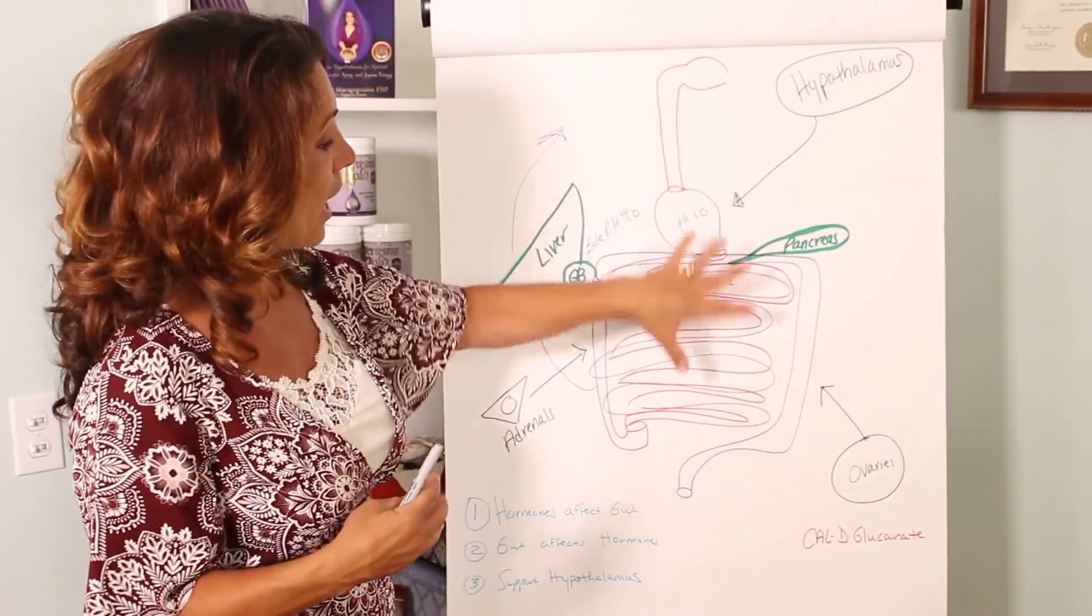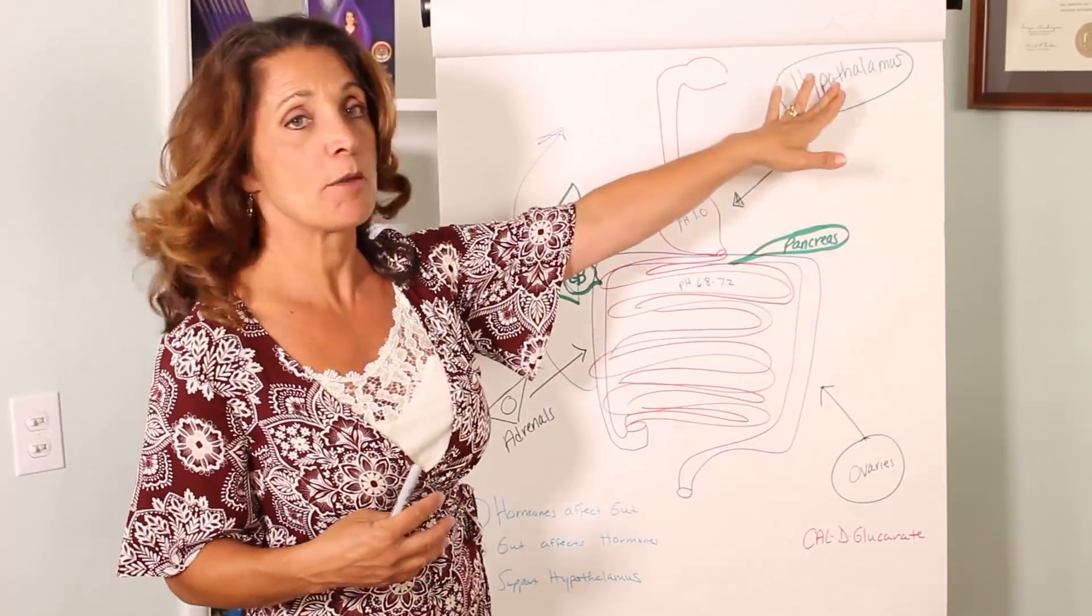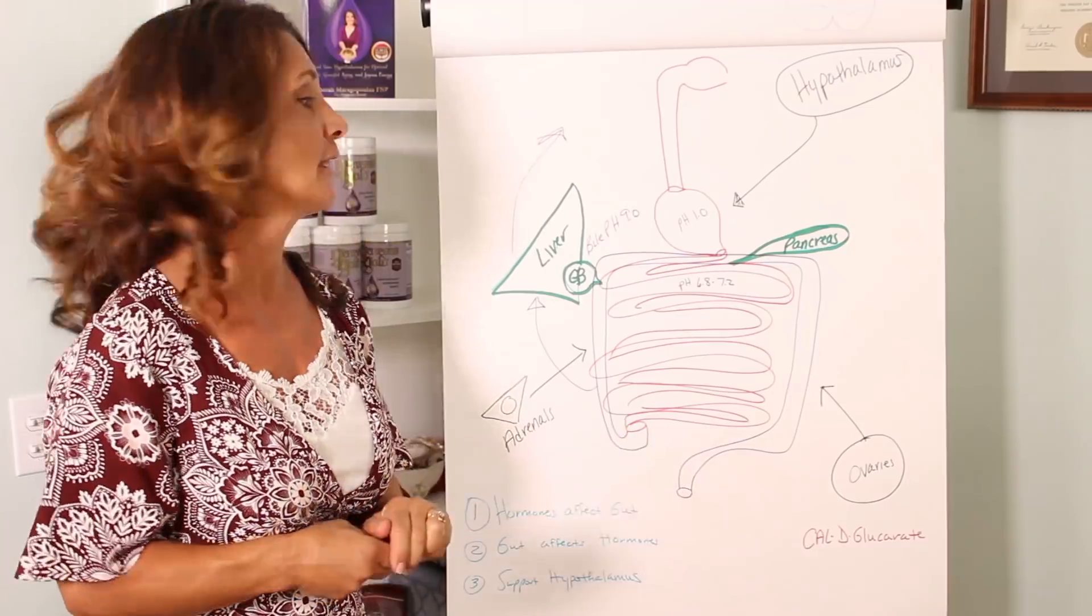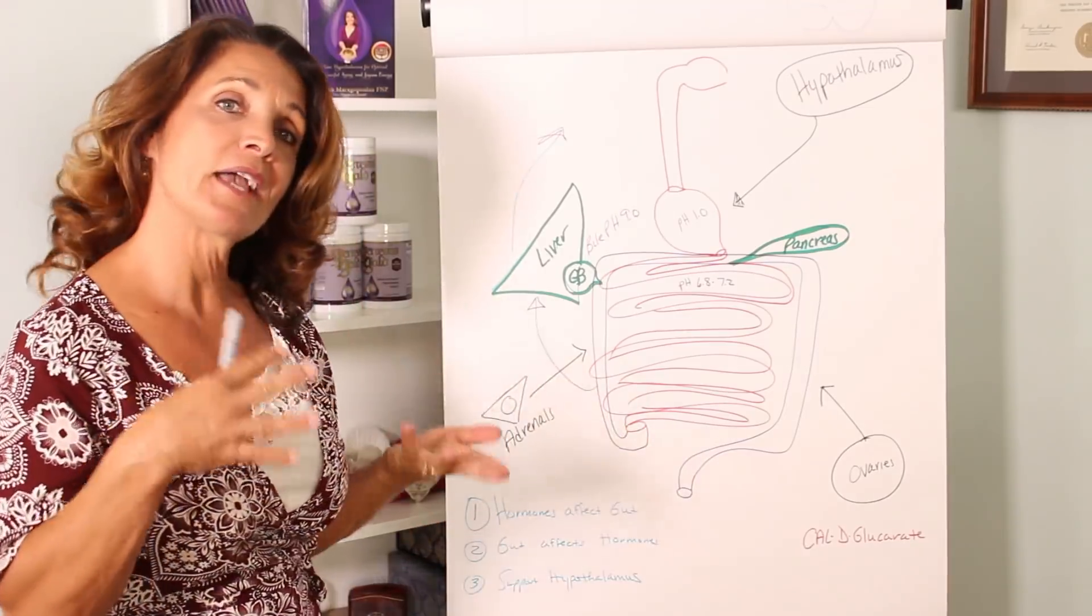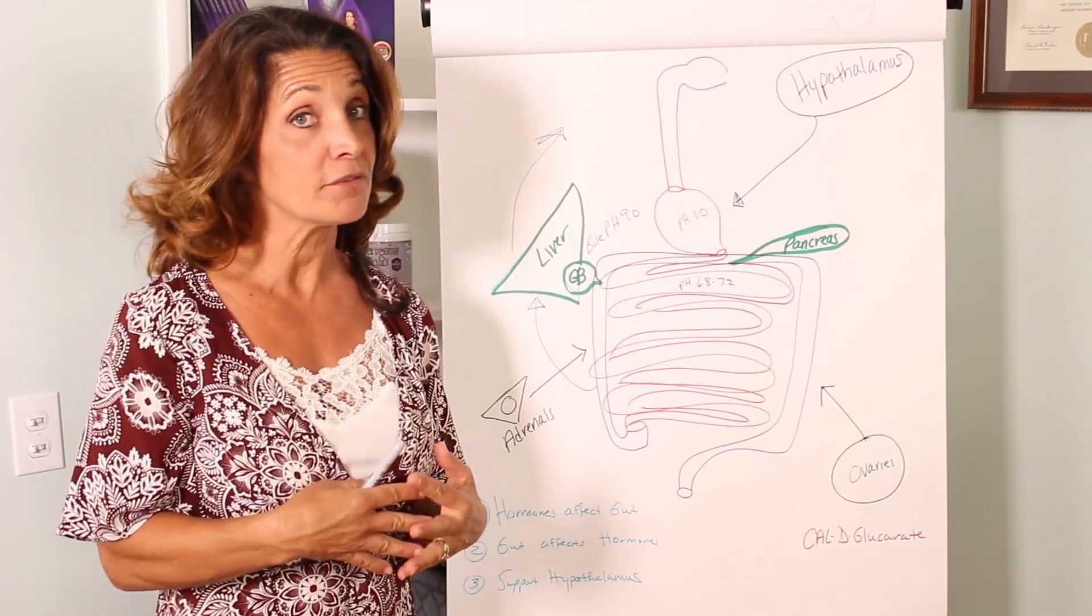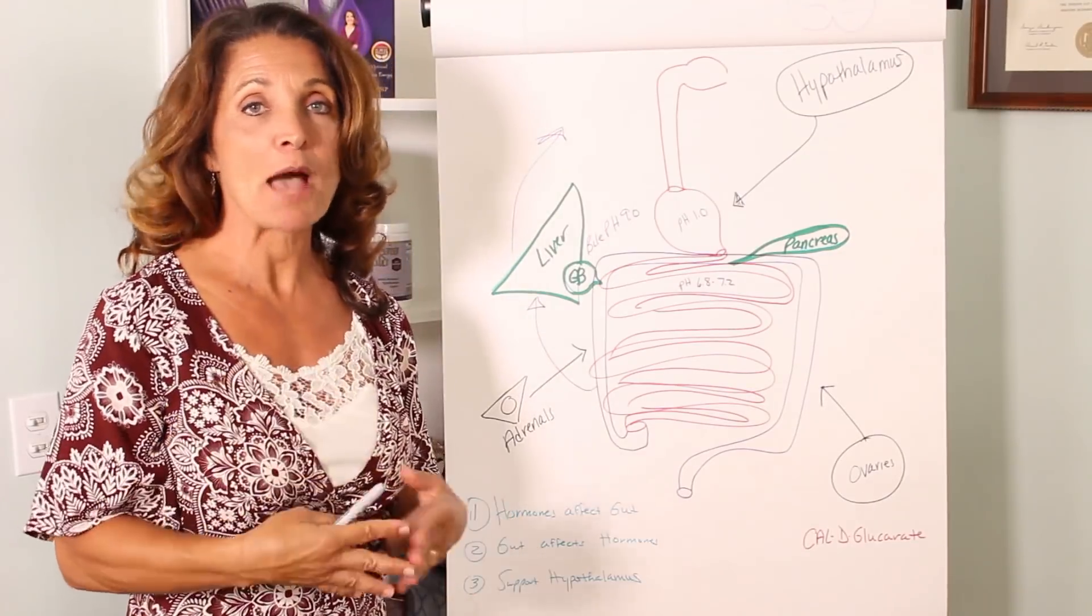So hormones do affect your digestion and your gut, which in turn tells the hypothalamus kind of to slow everything down because it feels like you're being attacked. Now, number two, your gut also affects your hormones. And the way your gut affects your hormones is that it affects the metabolism of your hormones.